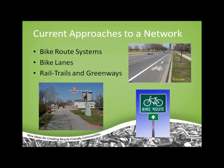The NACTO guide is really user-friendly — useful for engineers but also for lay people and bike advocates. It has great computer graphics, photographs, and is available in both electronic and PDF versions. Current approaches to bike networks include bike route systems, bike lanes, and rail trails and greenways as traditional methods. Bike route systems — identifying and signing appropriate routes — are often the first step communities take, particularly on low-volume roads with plenty of pavement width.